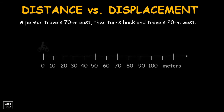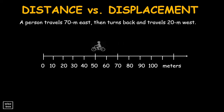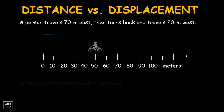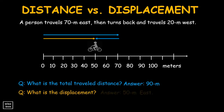Let's say a person travels 70 meters east, then turns back and travels 20 meters west. The total travel distance is 70 meters plus 20 meters, therefore it's 90 meters. While the displacement is 50 meters going east.